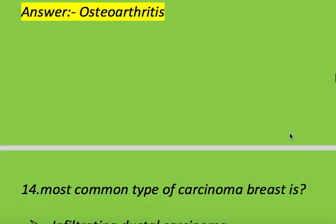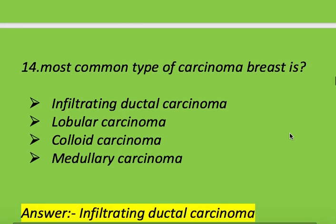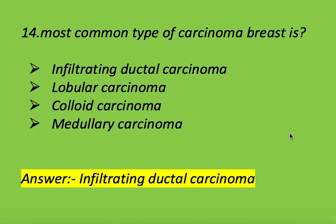Next question: what is the most common type of carcinoma of the breast? Options: infiltrating ductal carcinoma, lobular carcinoma, colloid carcinoma, and medullary carcinoma. Right answer is infiltrating ductal carcinoma — it is the most common type of carcinoma of the breast.